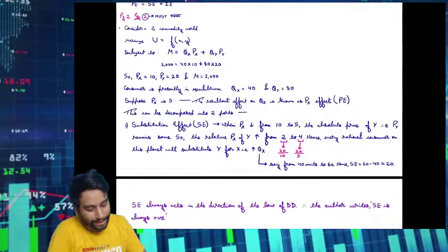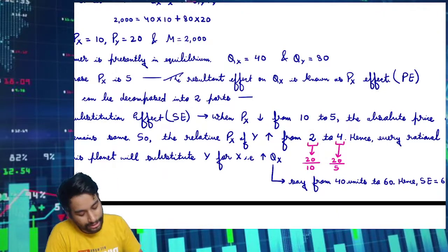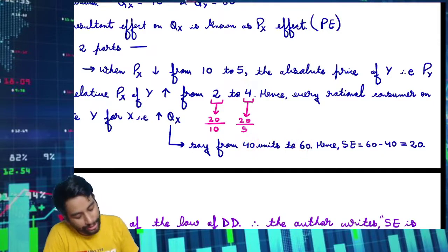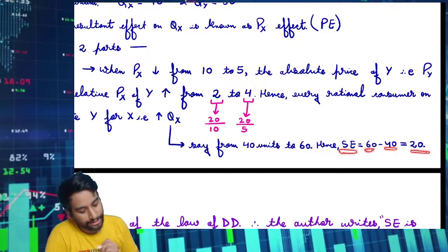So Y is becoming relatively more expensive. So let's say the quantity goes from 40 to 60. Substitution effect is 60 minus 40, that is 20.